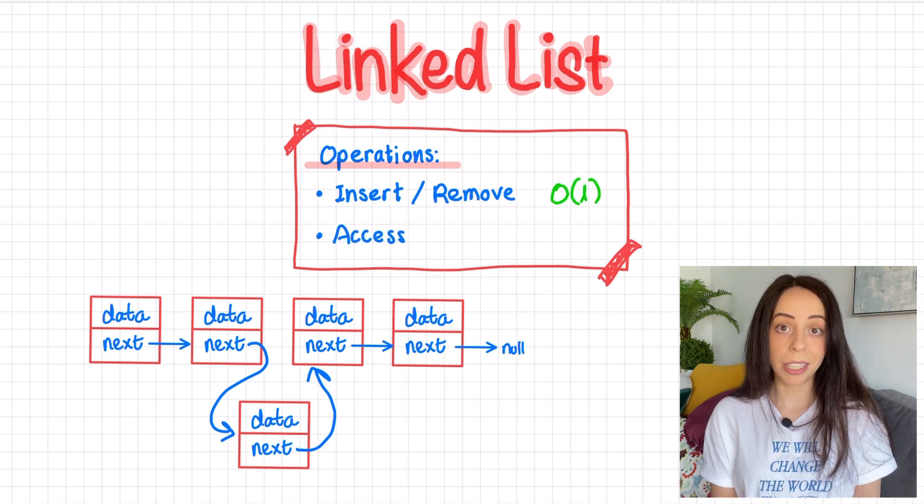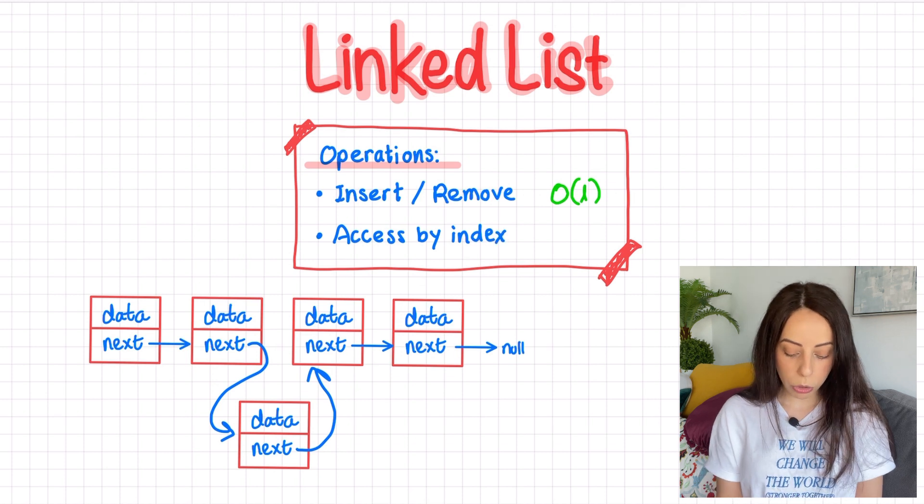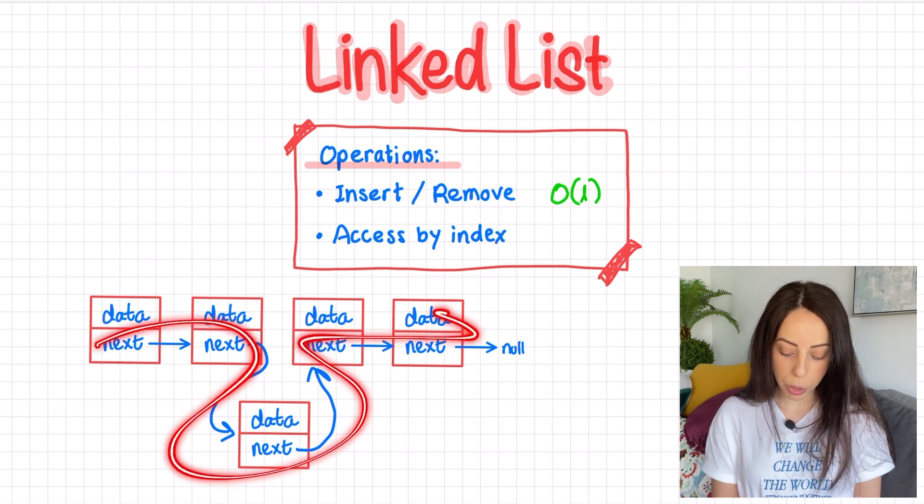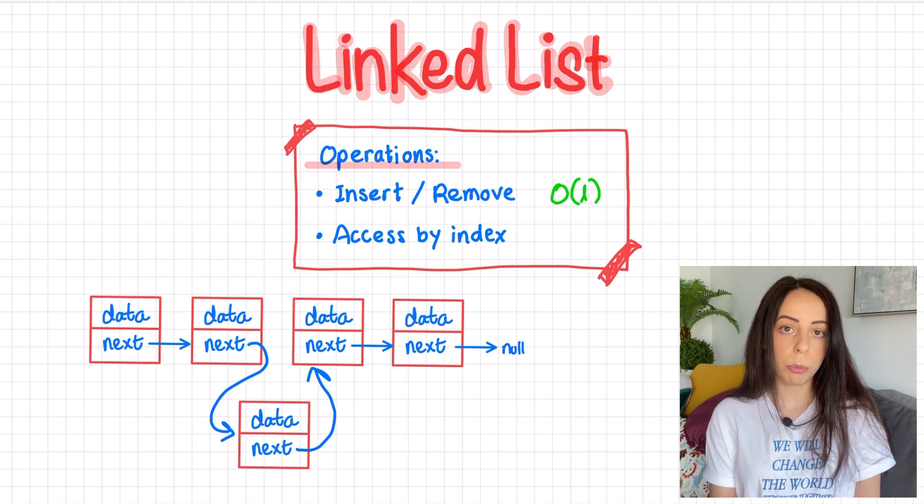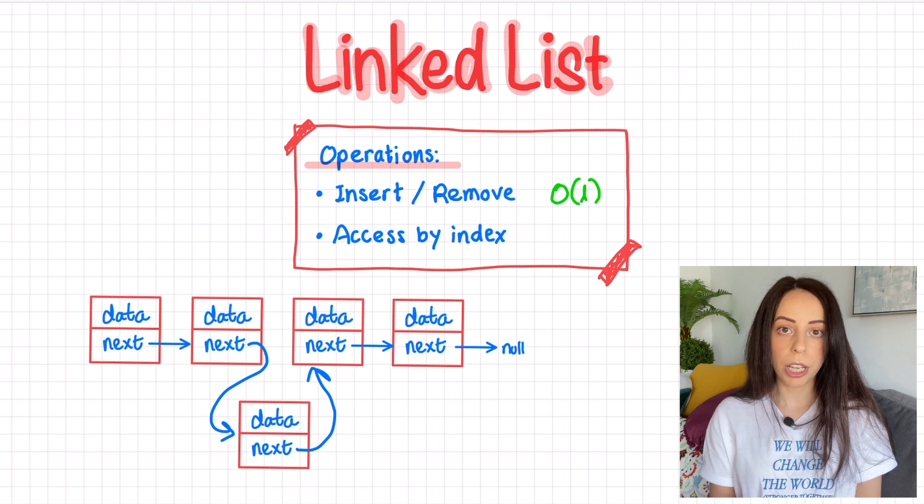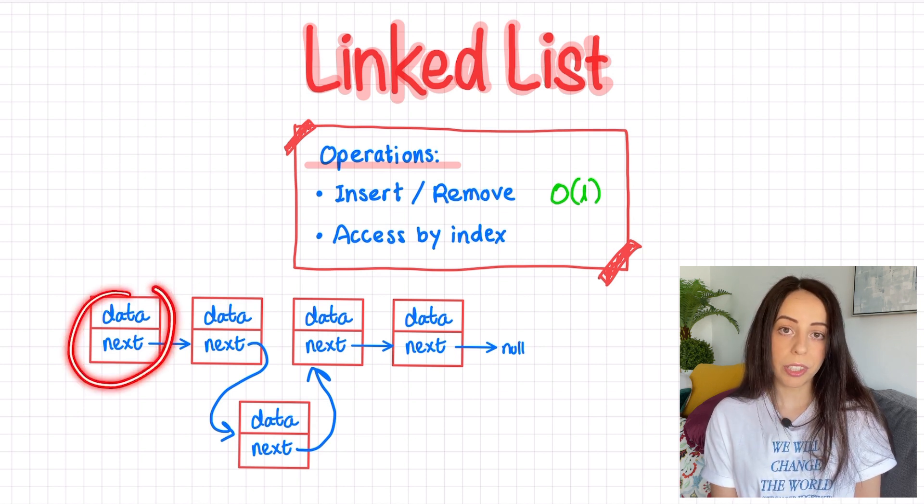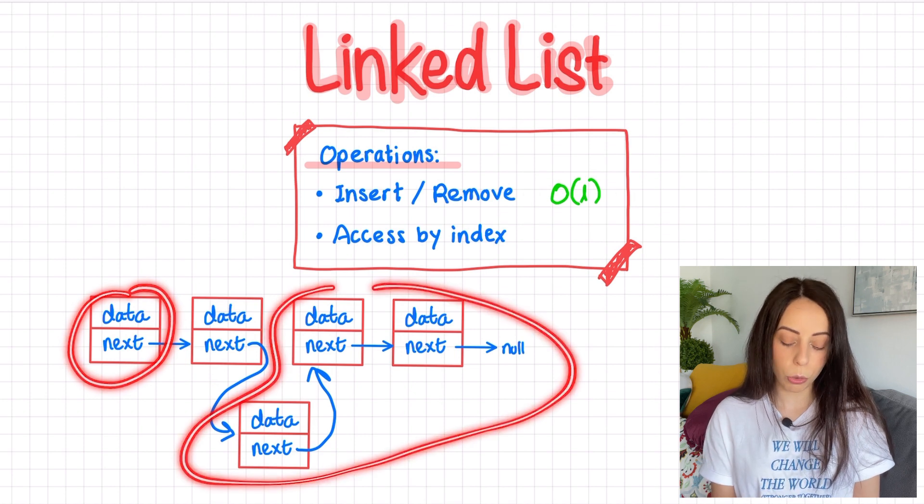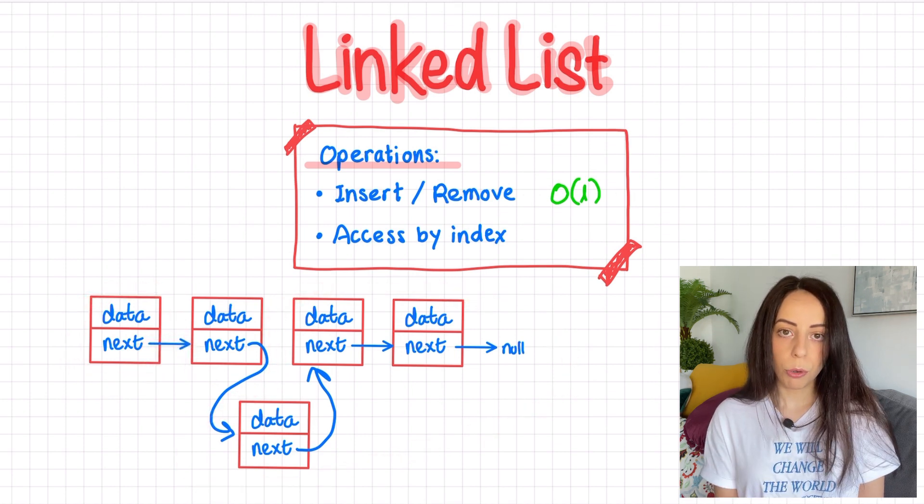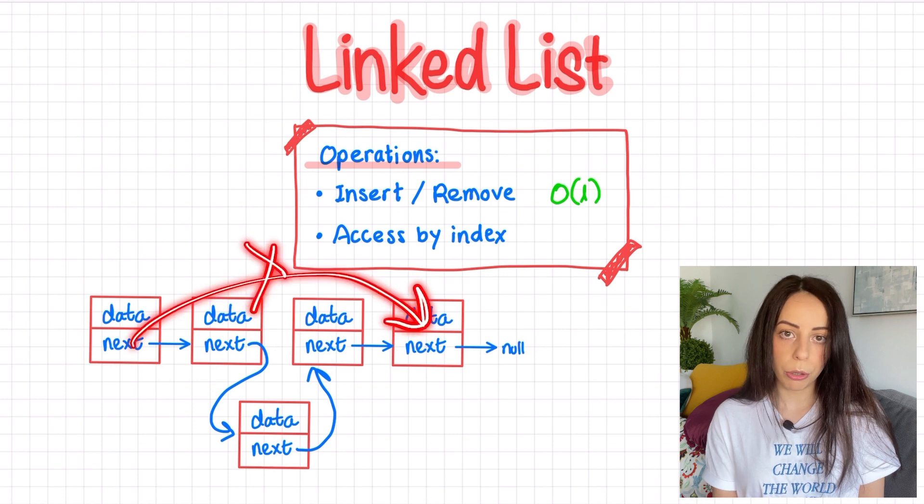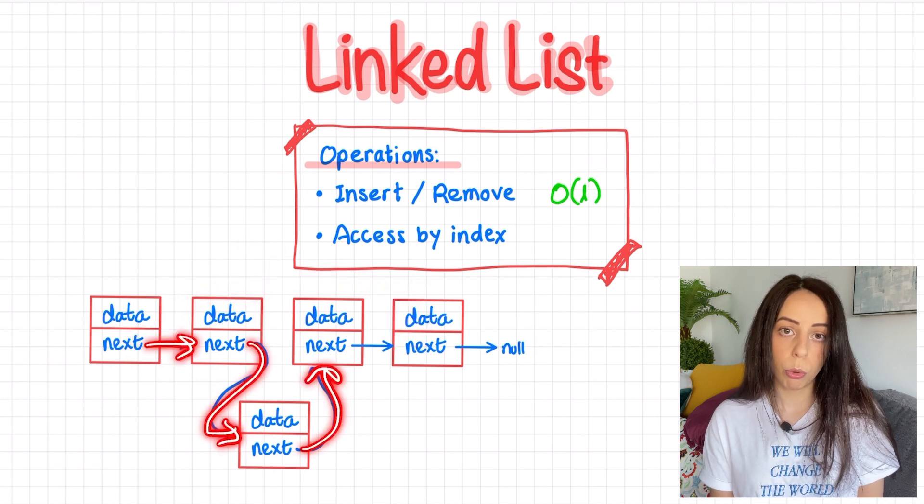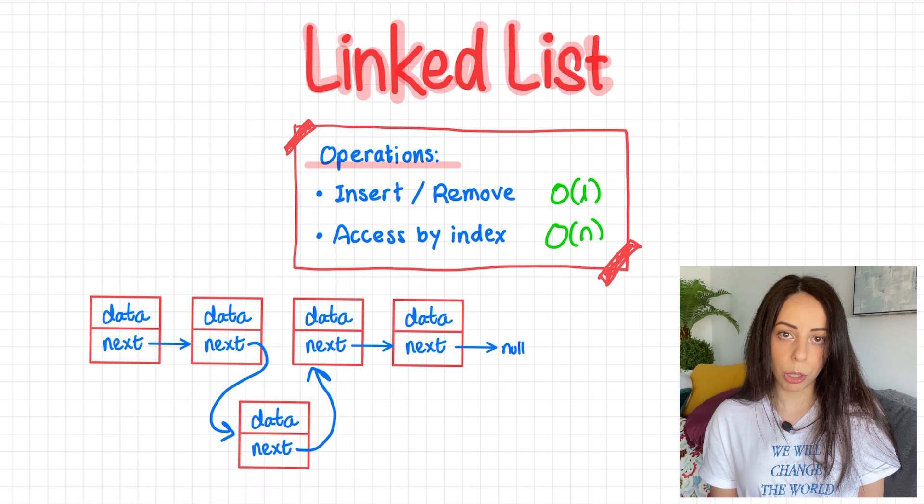Now, what about accessing an element at a specific index? Well, notice that these nodes are not in consecutive memory locations. So unlike the array, there is no way to compute the address of element n from the address of the first node. This first node is not even aware of any of the other nodes, it only knows which one is next. So if you wanted to access the element at index n, we can't jump straight to it. We have to iterate over n pointers. That is worst case over n operations.